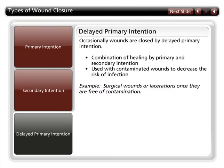Occasionally, wounds are closed by delayed primary intention. This is a combination of healing by primary and secondary closure, also called healing by tertiary intention. If a wound is contaminated, this technique may be used to decrease the risk of infection. The wound is initially cleansed and observed for several days. Once the wound appears clean, it is surgically closed. In general, delayed surgical closure is used on surgical wounds or lacerations once they are believed to be free of contamination.